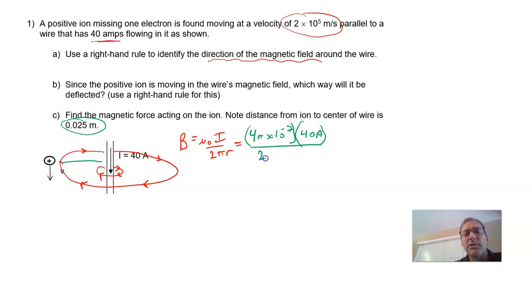All over 2 pi times 0.025 meters. So that gives a magnetic field strength at that position of 0.000032 teslas. That's a small field strength.